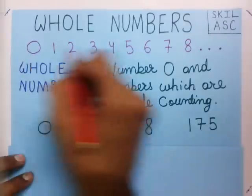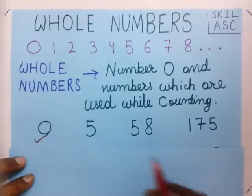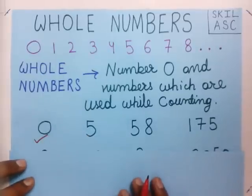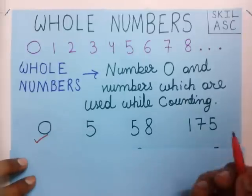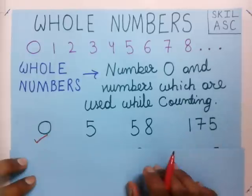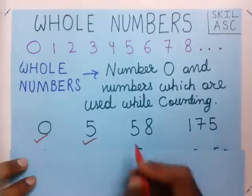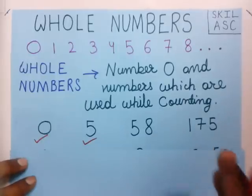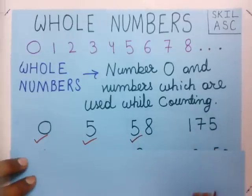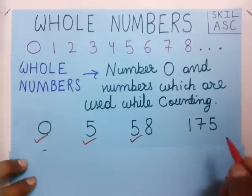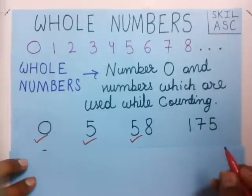Is 5 a whole number? You see, 5 is used while counting, so 5 is also a whole number. Now, 58 is also used while counting, so 58 is also a whole number. Now, 175 — this number is also used in our daily life while counting, so this is also a whole number.